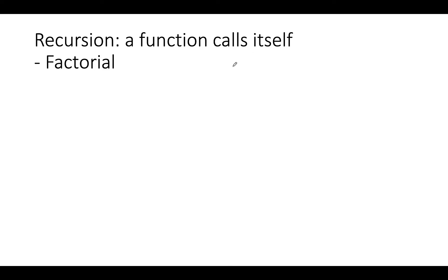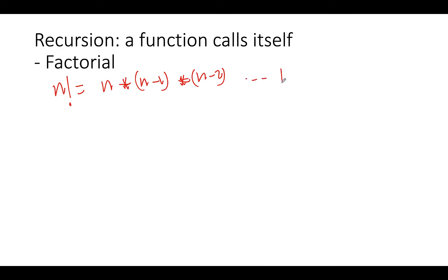The function doesn't necessarily call another function — it calls itself. To explain these functions, I'm going to use two classical examples: the factorial and the Fibonacci series. So let's start with the factorial. The factorial of an integer number n is defined as n times n minus one times n minus two, all the way to one.